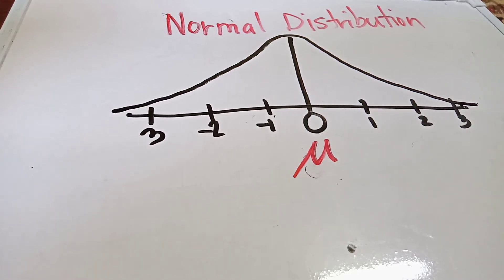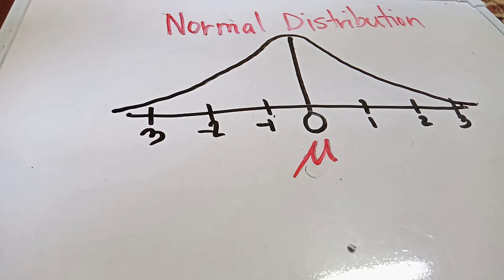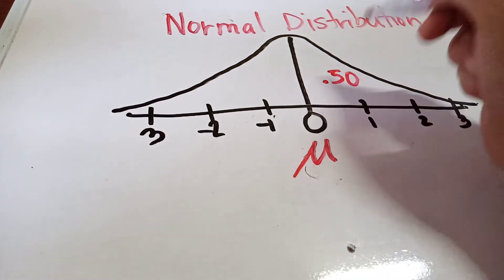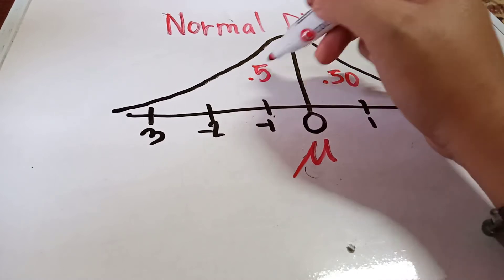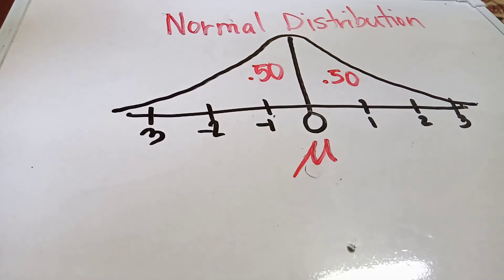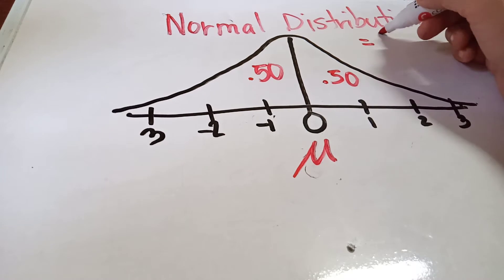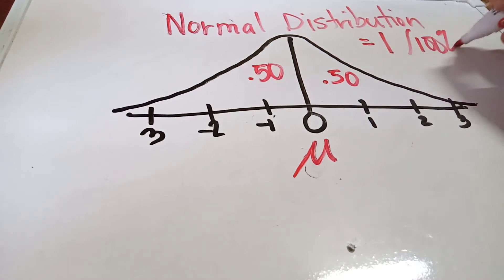This is the normal distribution, and we consider it symmetrical. When we say symmetrical, we mean the right and left bell curves are mirror images. The right curve is equivalent to 0.50, and the left curve is also 0.50, so 0.50 plus 0.50 equals 1, or 100 percent. This is the skeleton of the normal distribution.